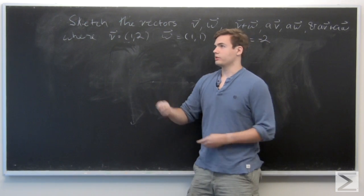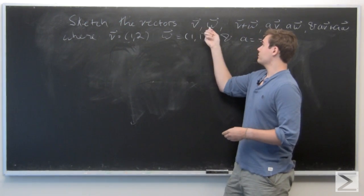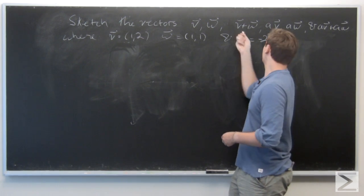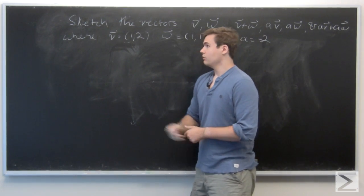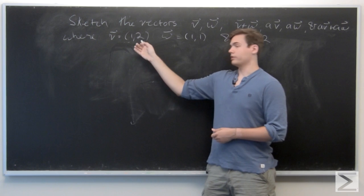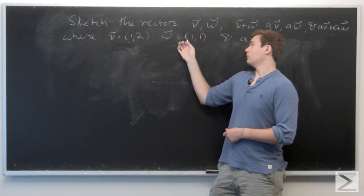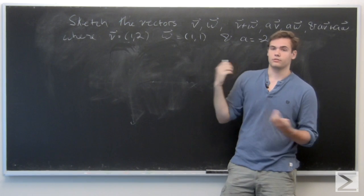So what we have here is we want to sketch two vectors, their vector sum, and some scalar multiples of those objects. Where the vectors here are (1,2), (1,1), and the scalar is minus 2.